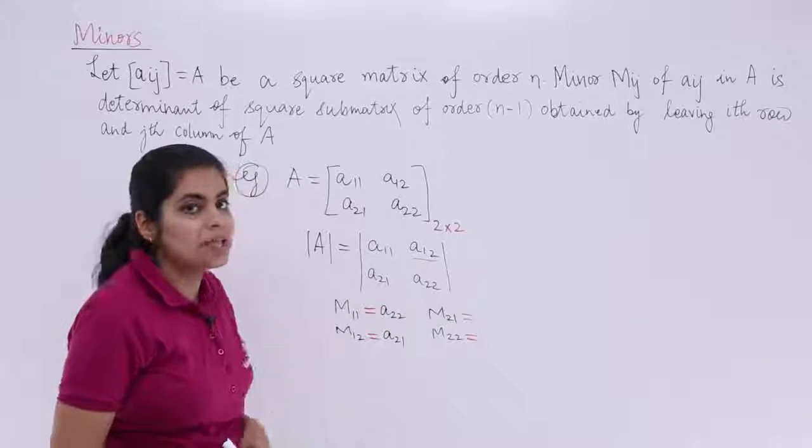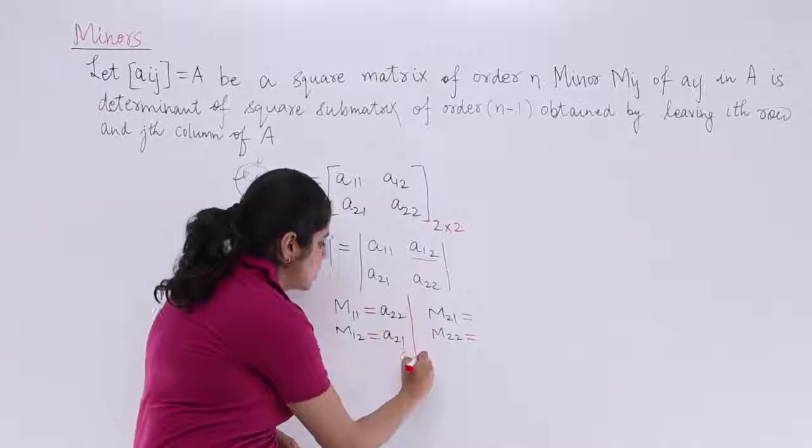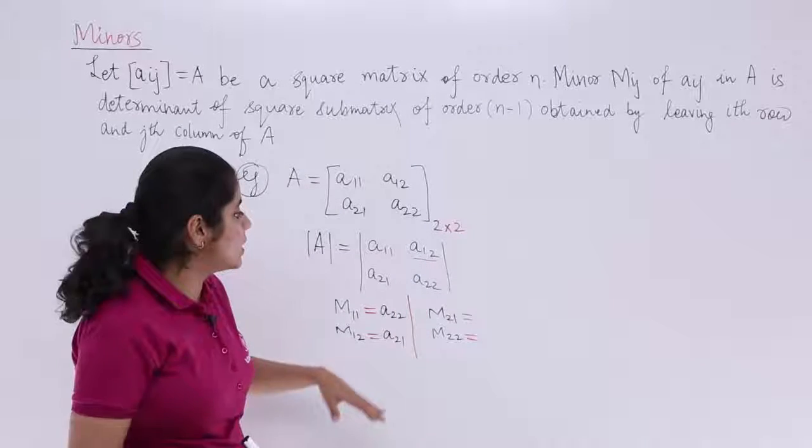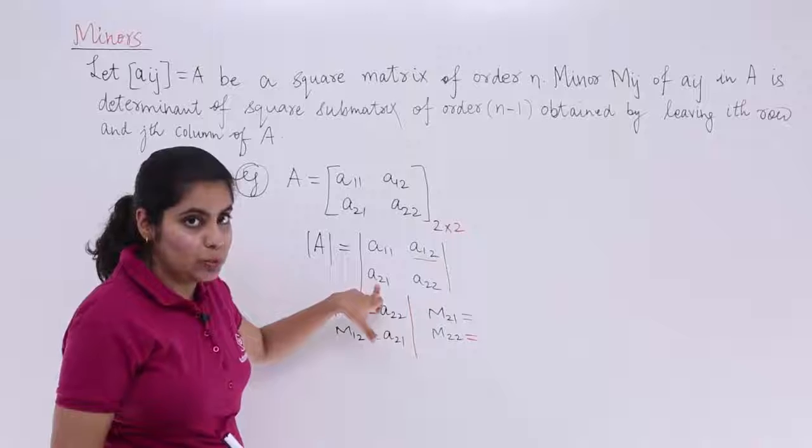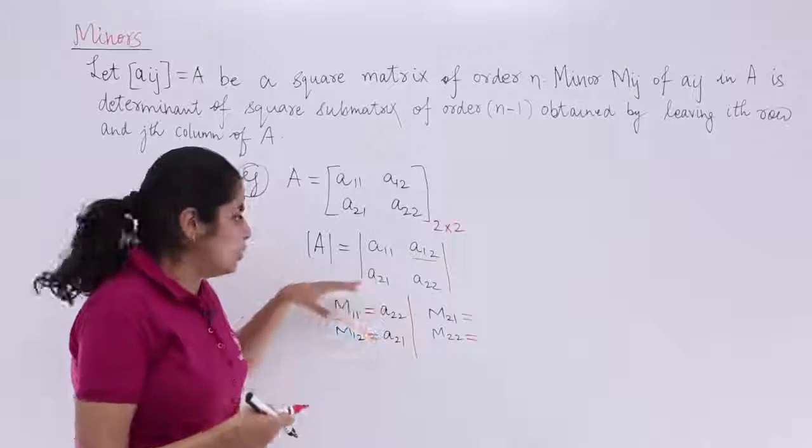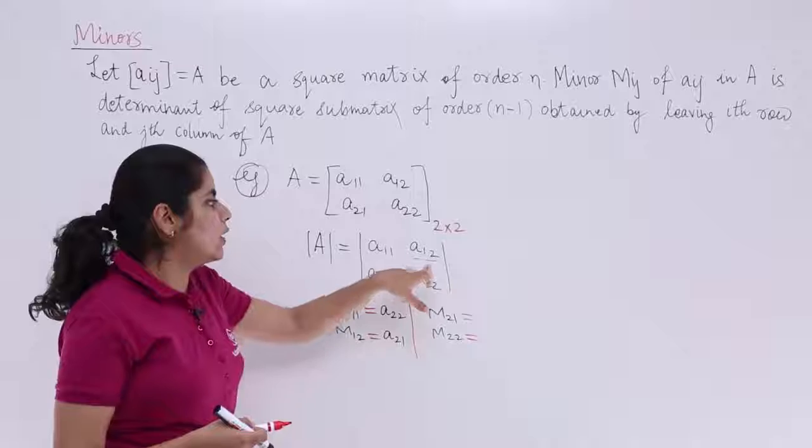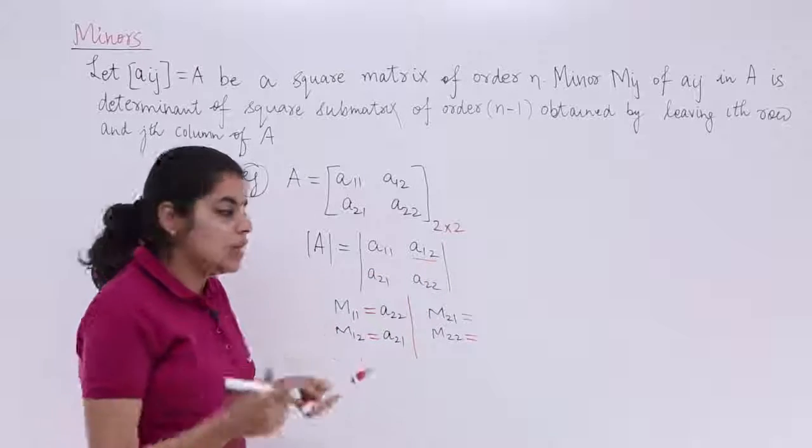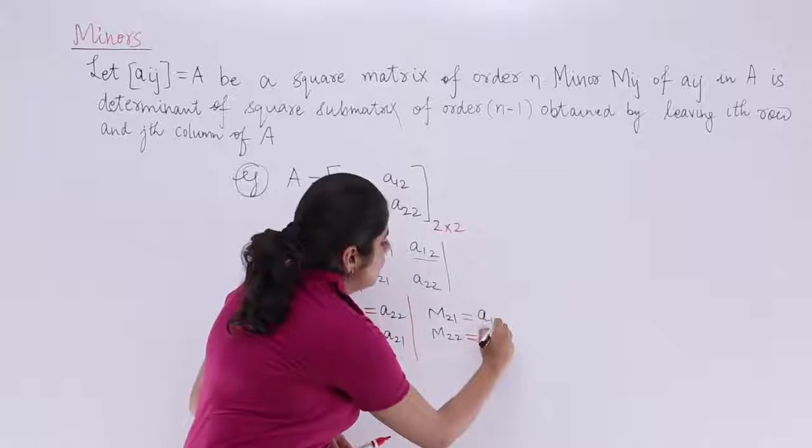Similarly, move towards M21. M21 is related to A21. Now A21, you leave the corresponding row, you leave the corresponding column, you have A12. That is what is to be done. Write A12.